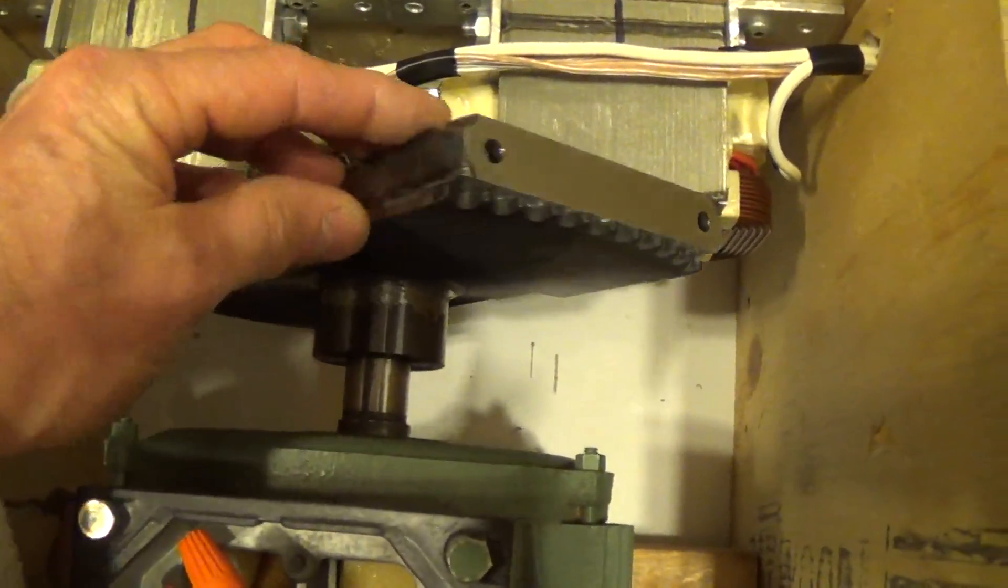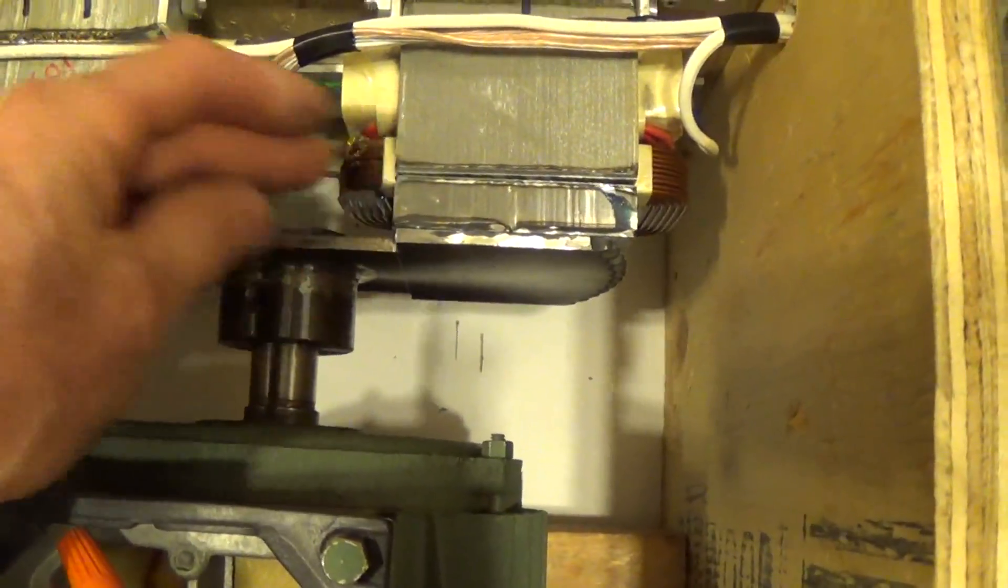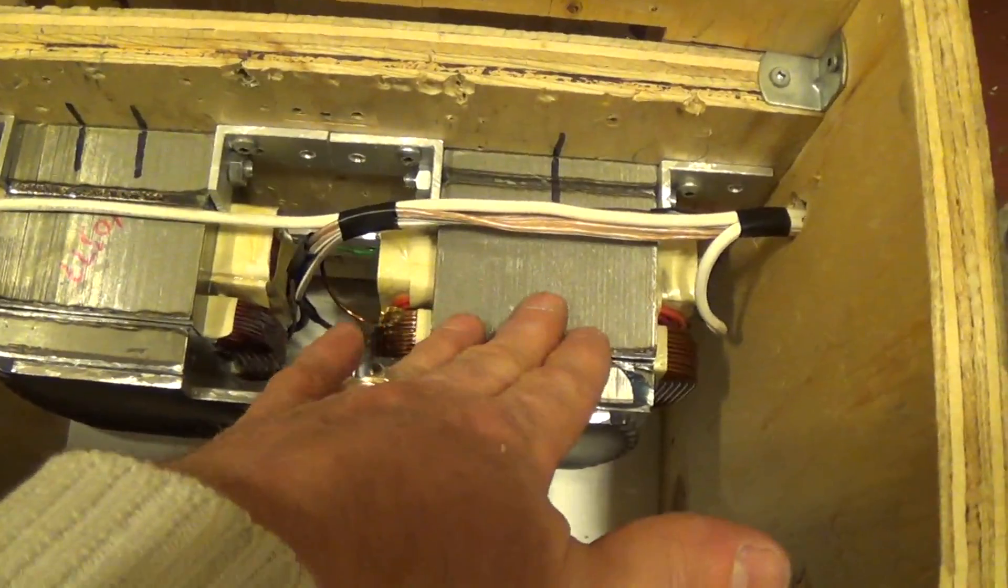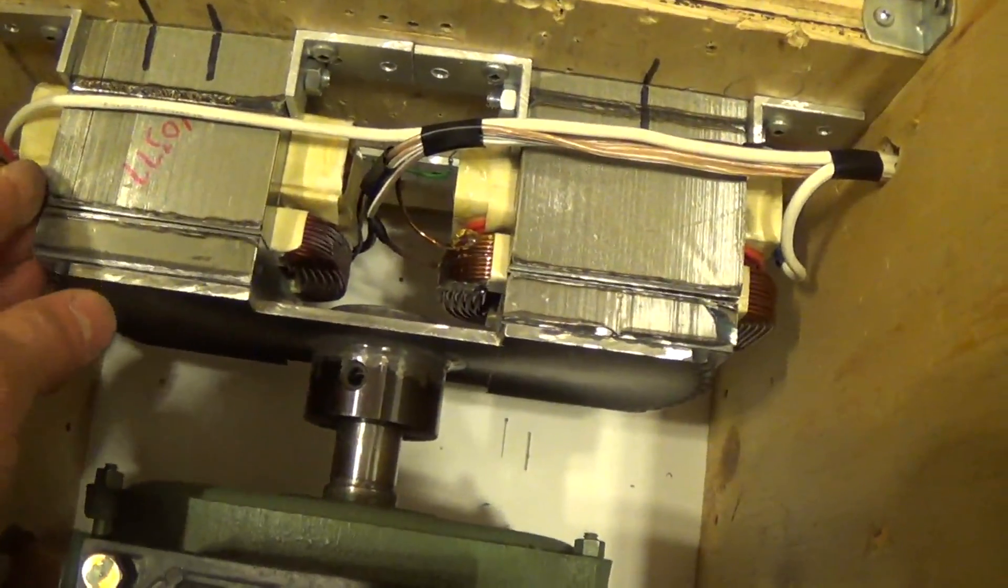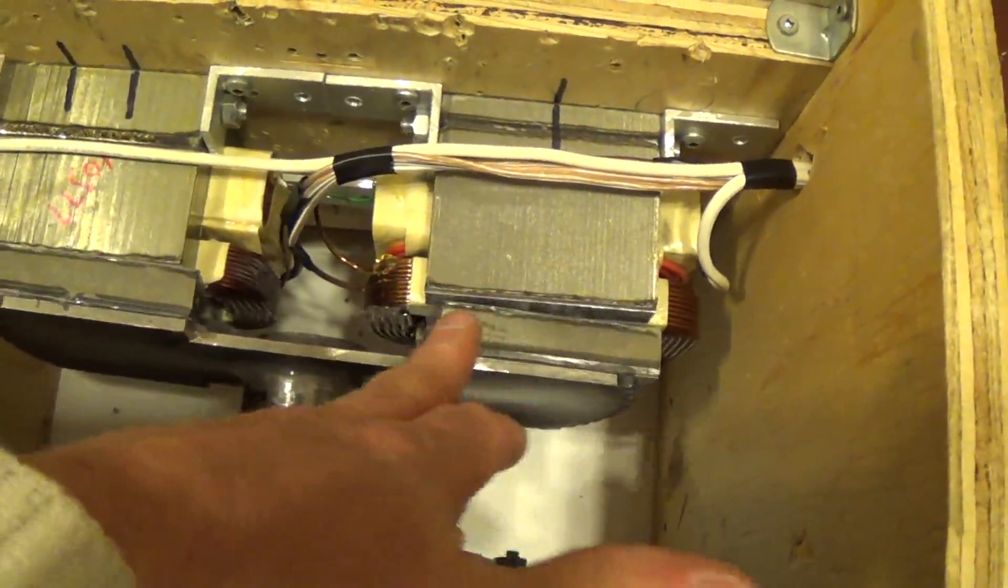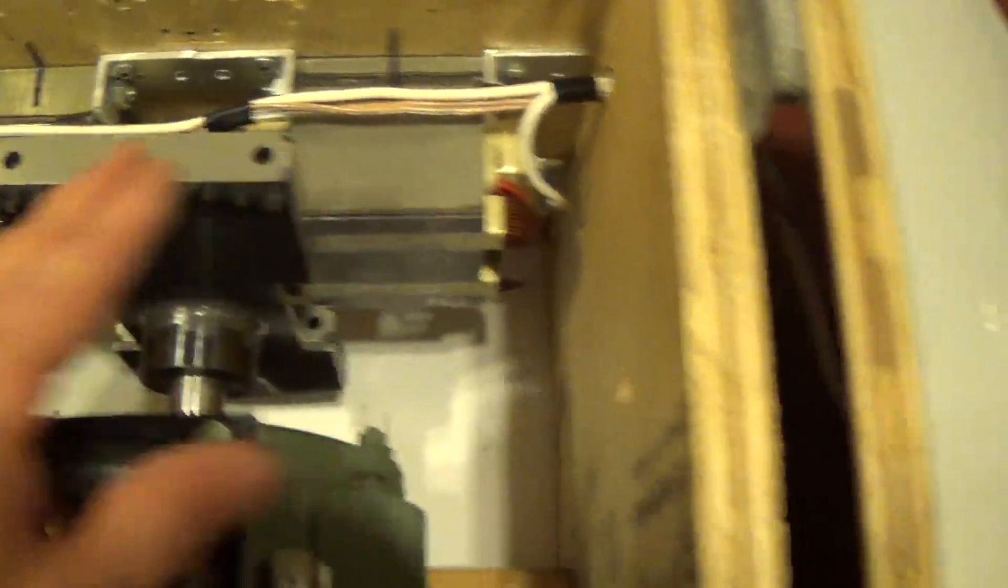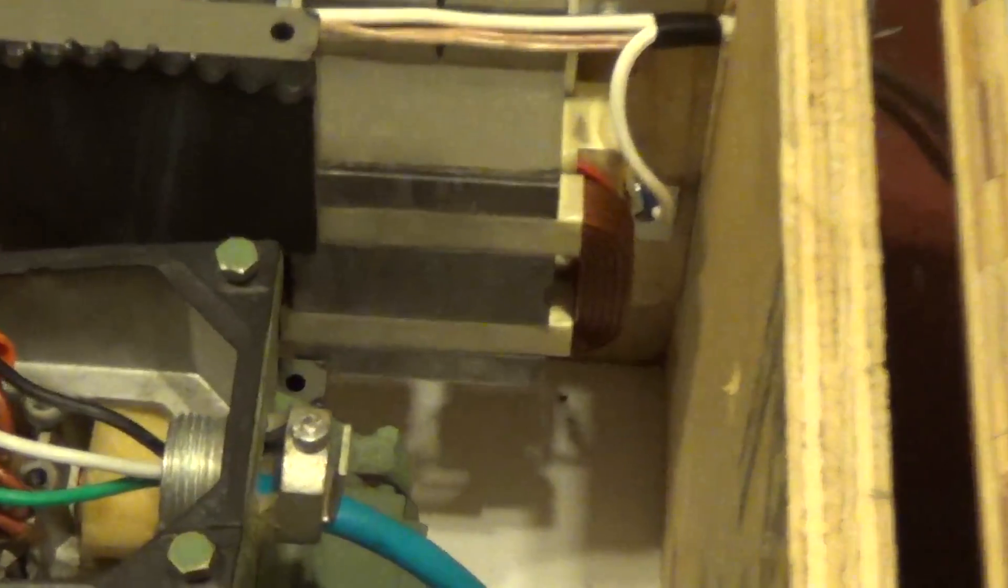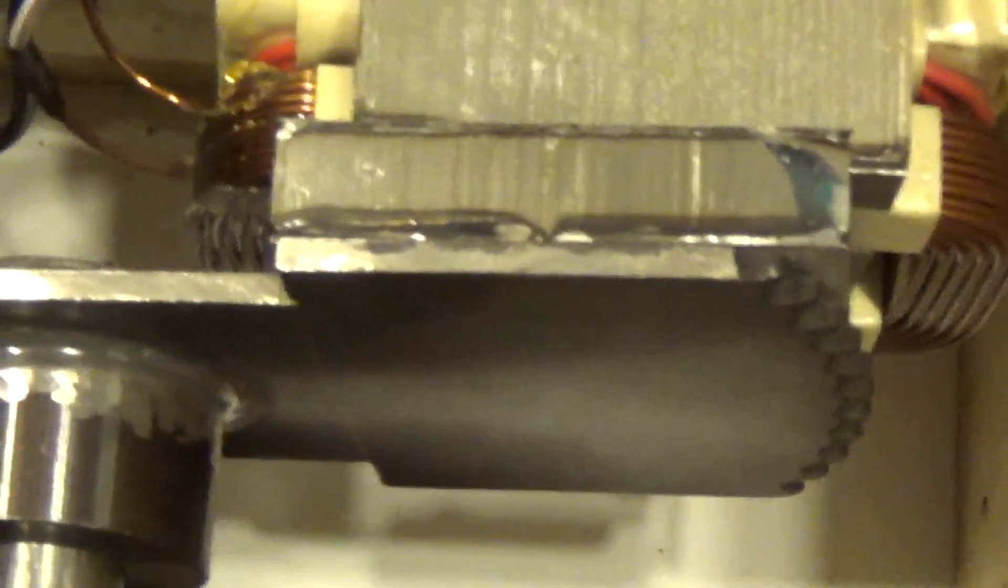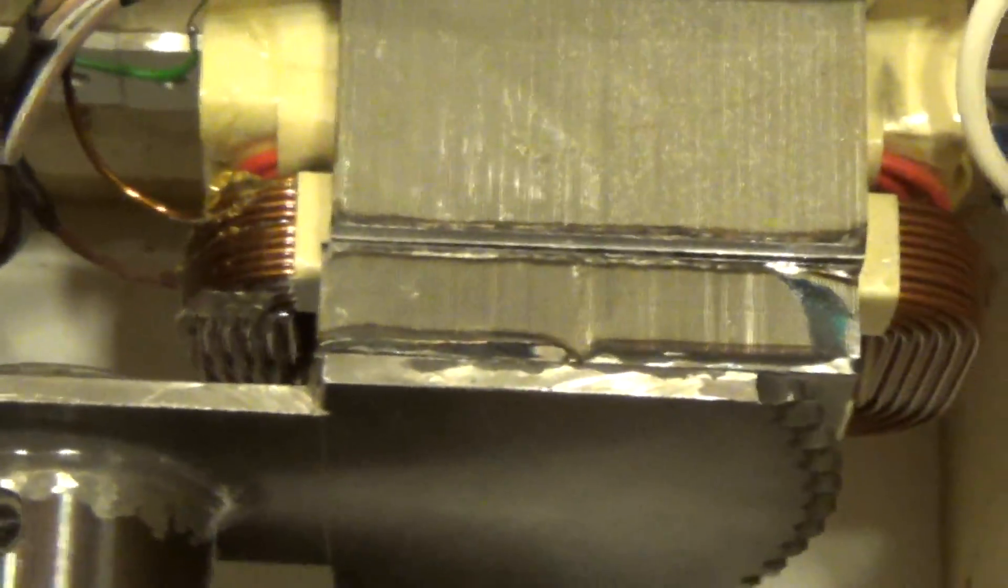Basically what it is, it has two microwave oven transformers in there connected in series. And these are the eyes of each microwave oven transformer. So here it's open on each side. There's the microwave oven transformer open there, and then the motor obviously turns it here, and there it is perfectly aligned.